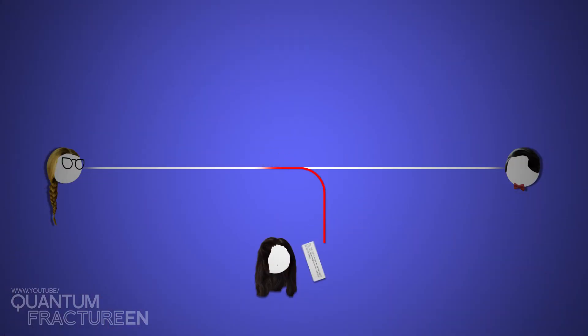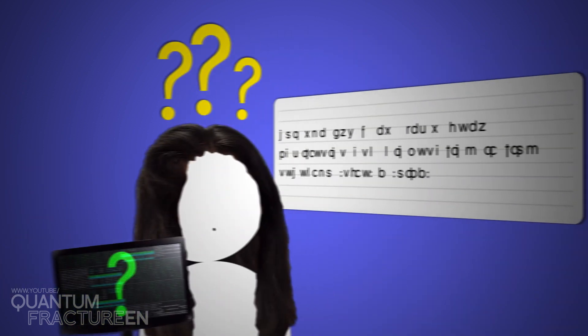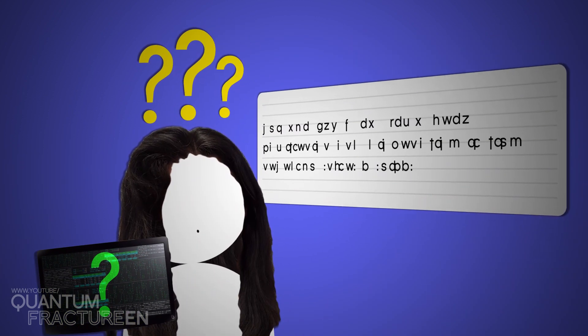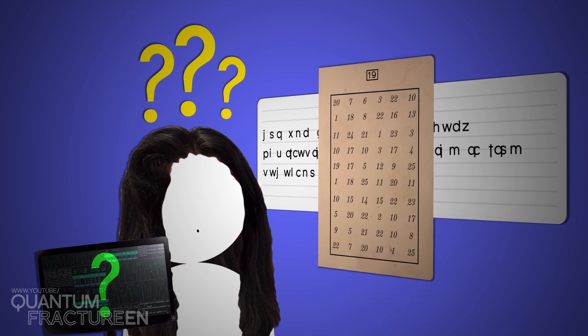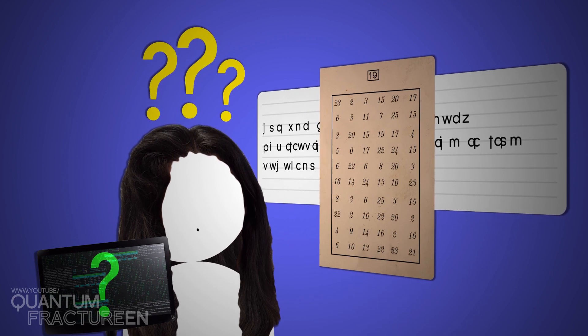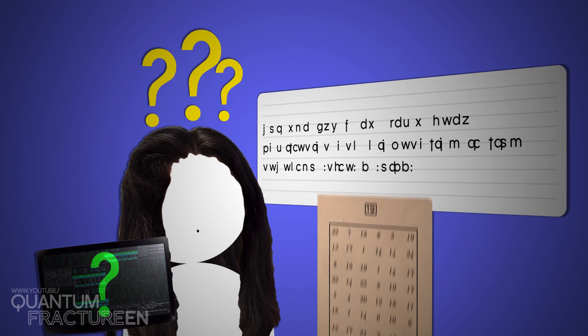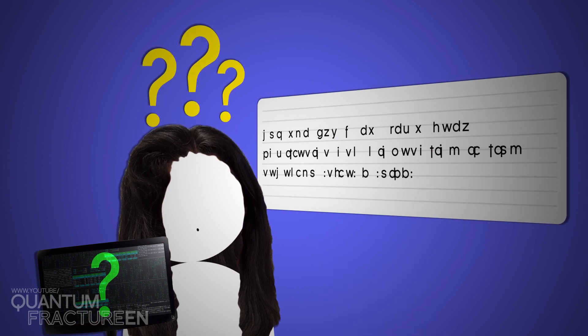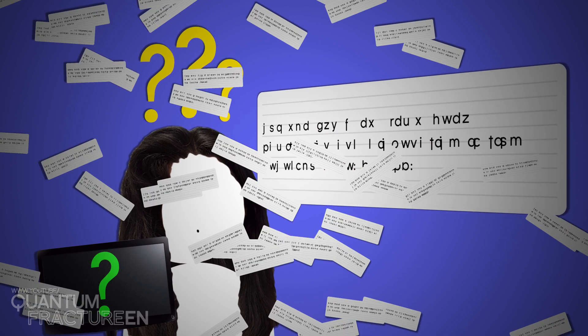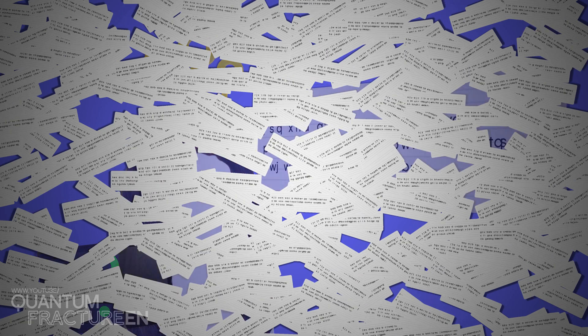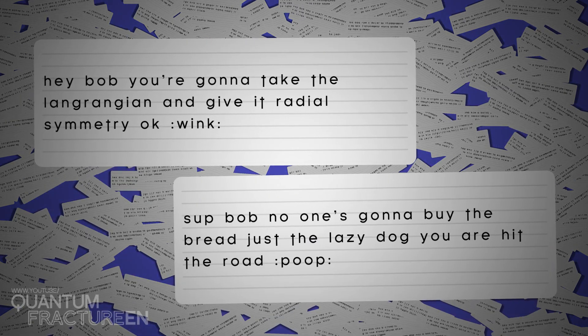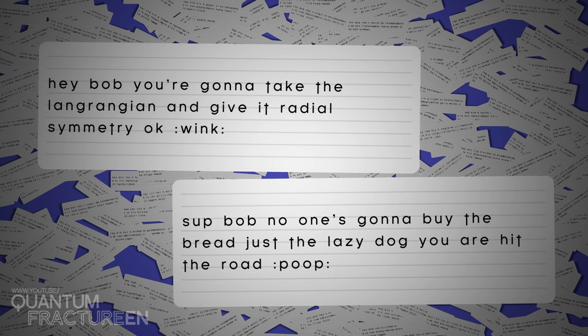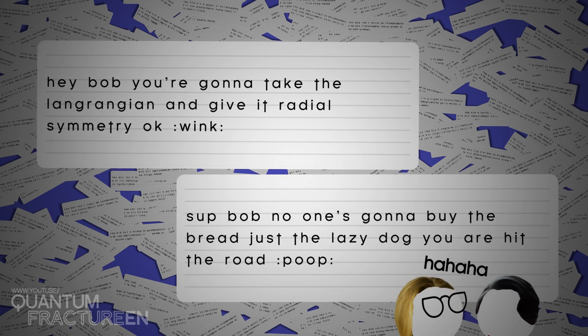If Eve intercepts the message, not only will she not understand a thing, but she'll also find it impossible to decipher the original text. The key literally could have modified the message in a gazillion ways. So if Eve wanted to try every possible combination using brute force, she'd have to check every possible message that could be written using those letters, including perfectly coherent messages that Eve wouldn't be able to distinguish from the original. Alice and Bob's privacy is safe.